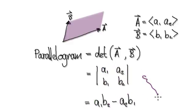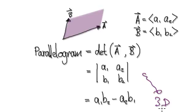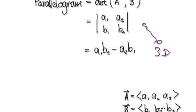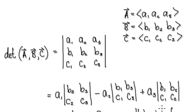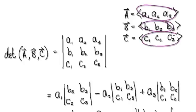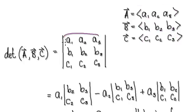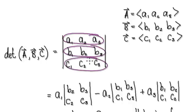Now let's extend it to 3D, just to give you an idea of what's going on. Suppose you have three vectors — one vector, one vector, one vector — rewritten as a matrix with one vector, one vector, and one vector.